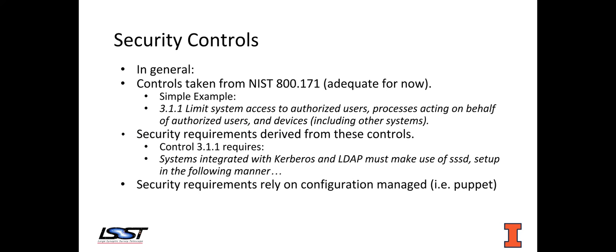A simple example of what you would find in all the subsystem sub-plans would be this control: limit system access to authorized users. The requirements document would say, if you want to implement this control, then the system has to integrate with our identity and access management system, and it must make use of these utilities configured in the following manner. The idea is that these requirements, which are written out in a document, can change without change control board approval, as long as they're properly implementing this control. Really what we are driving towards is relying on configuration management to make sure the security controls are properly implemented.